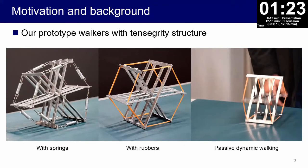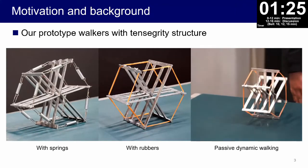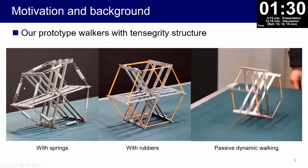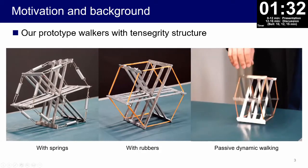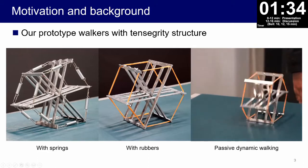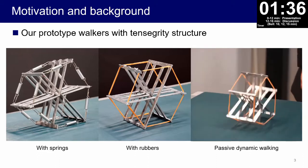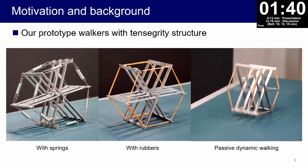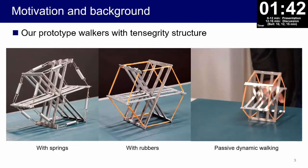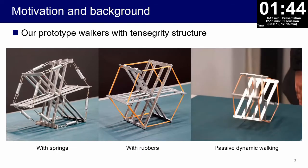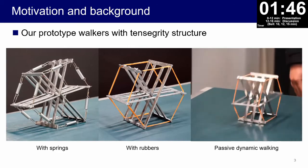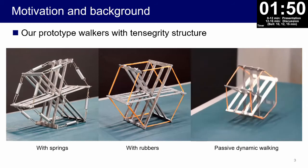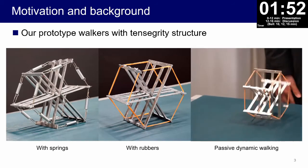This is our prototype walker with tensegrity structure formed by three limbs and six springs or six rubbers. We have experimentally confirmed that the walker can generate a stable gait on a gentle downhill. In this paper we developed the mathematical model and numerically investigate the effect of the springs with dampers.